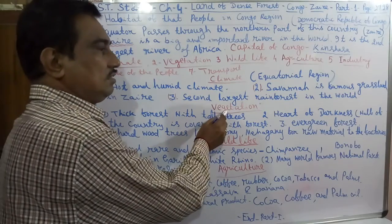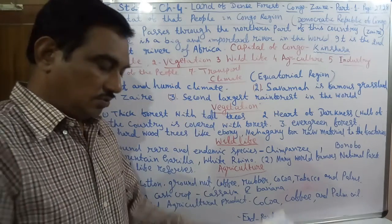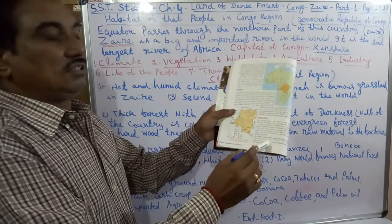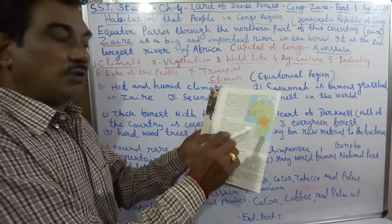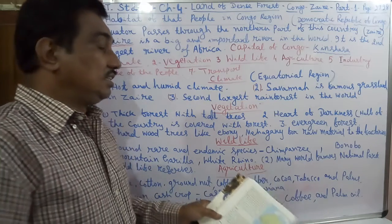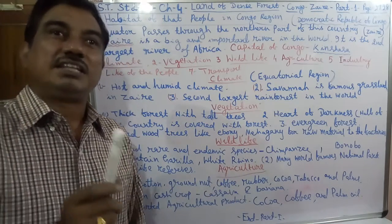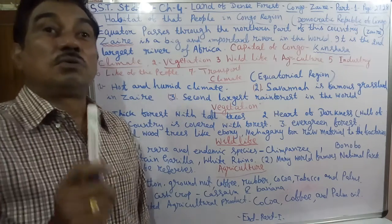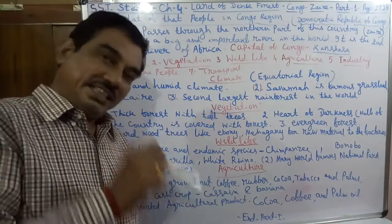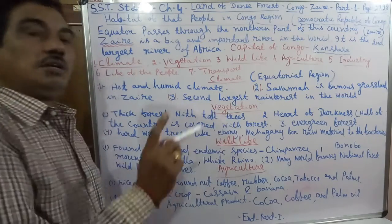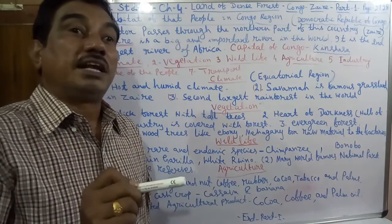Then comes vegetation. Thick forest with tall trees — it is called the heart of darkness, because half of the country is covered with thick forest. Evergreen forests are found in this area. Hardwood like ebony and mahogany are found here and used as raw materials for factories.